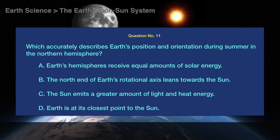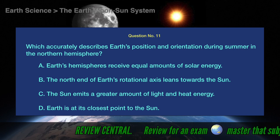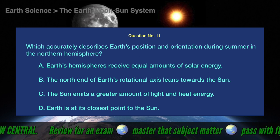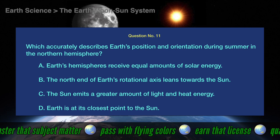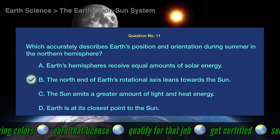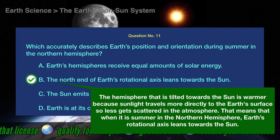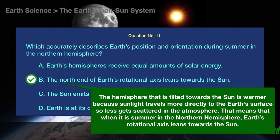Question number 11. Which accurately describes Earth's position and orientation during summer in the Northern Hemisphere? A. Earth's hemispheres receive equal amounts of solar energy. B. The north end of Earth's rotational axis leans towards the Sun. C. The Sun emits a greater amount of light and heat energy. D. Earth is at its closest point to the Sun. The correct answer is B. The north end of Earth's rotational axis leans towards the Sun. The hemisphere that is tilted towards the Sun is warmer because sunlight travels more directly to the Earth's surface, so less gets scattered in the atmosphere.